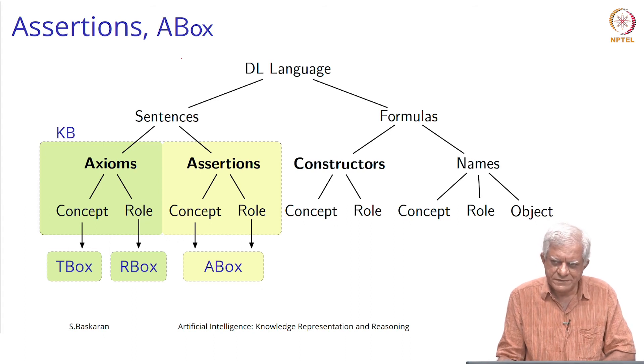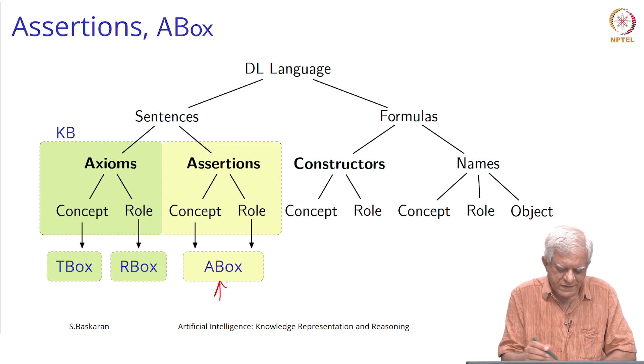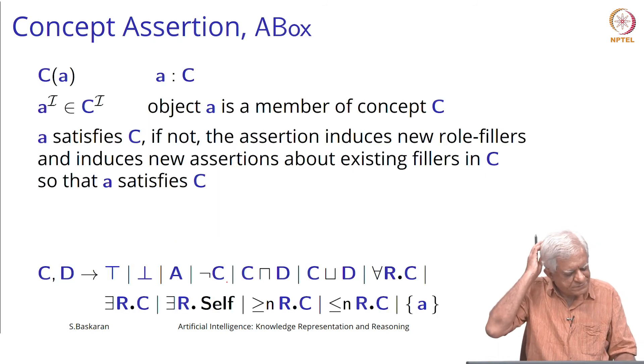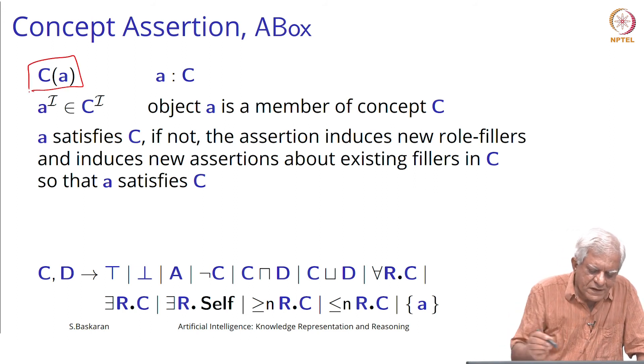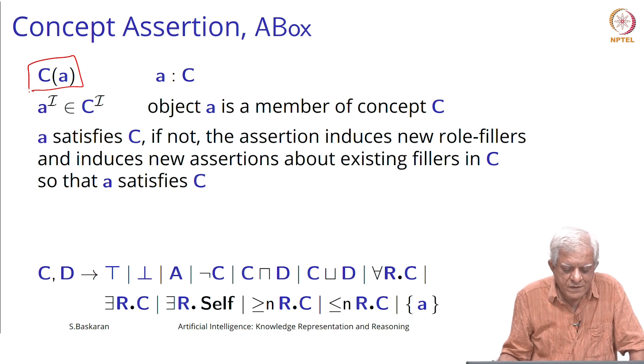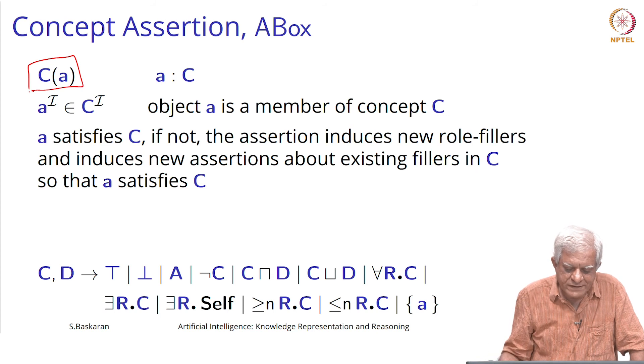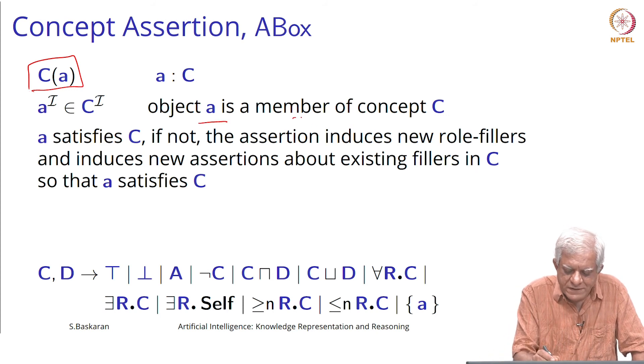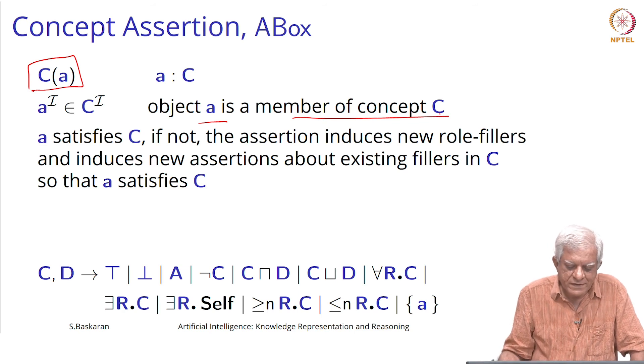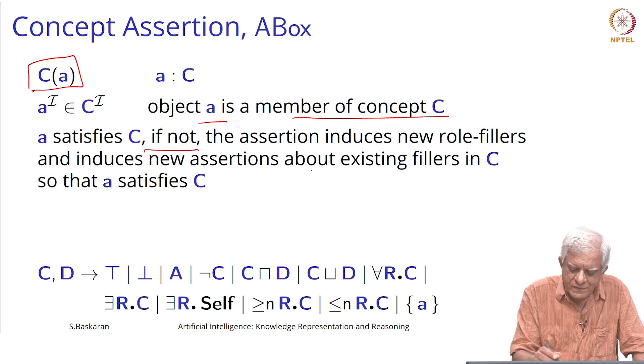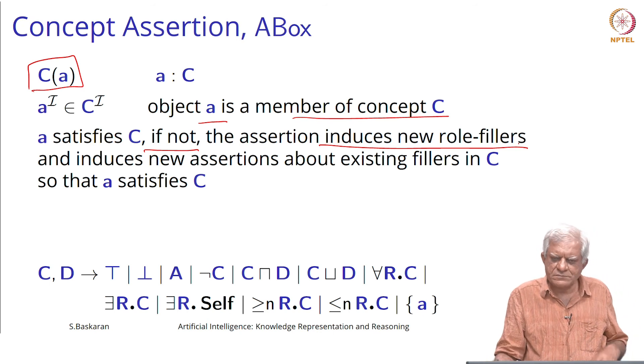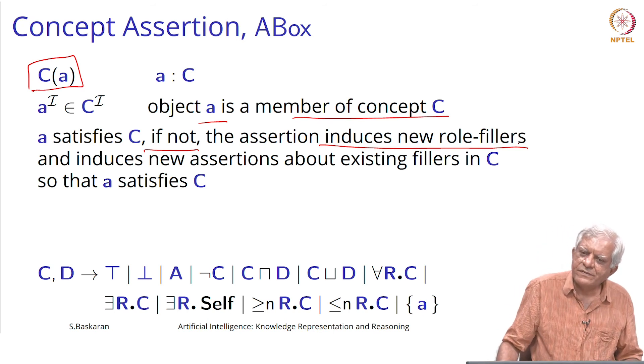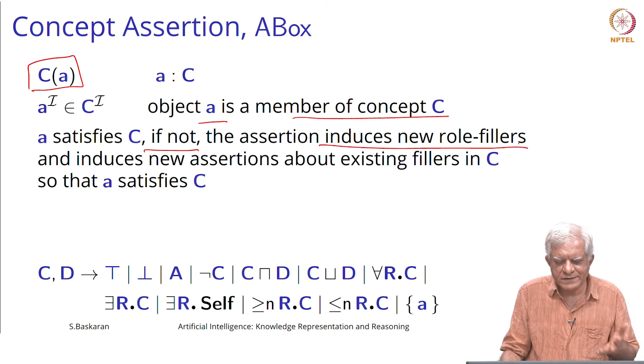Finally, assertions which is to talk about A box, which talks about individuals. We can assert that a belongs to the class C, that a is a C for example, or object a is a member of the concept C. If that is not true, once we assert that if it is not true that it induces new role fillers. If we say for example, a is an aunt and in our knowledge base it is not clear that a is an aunt.